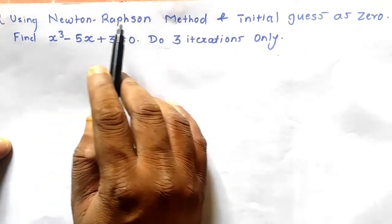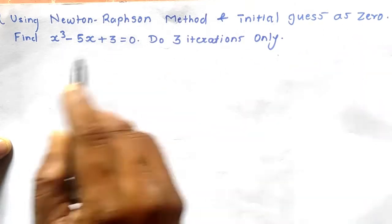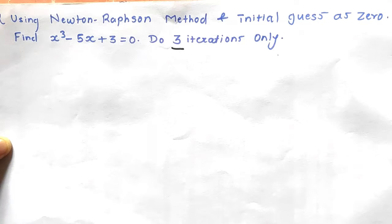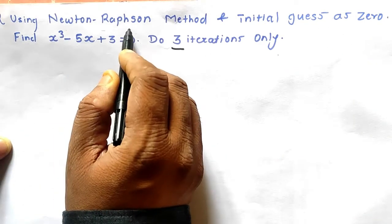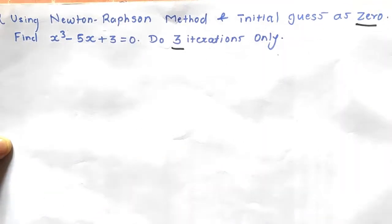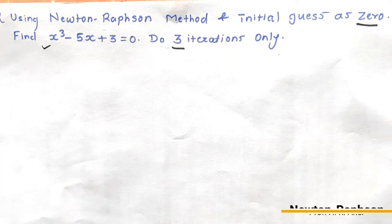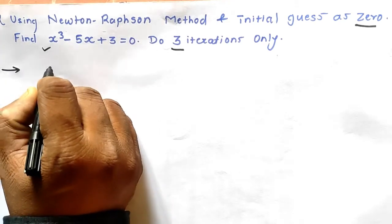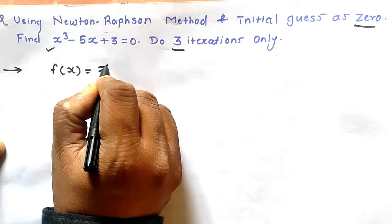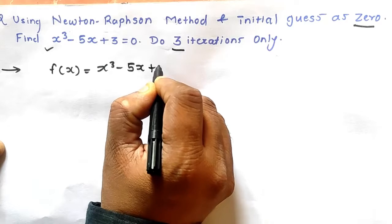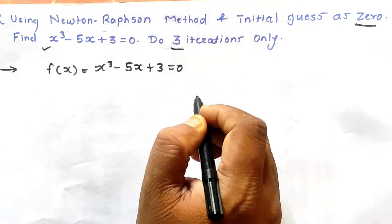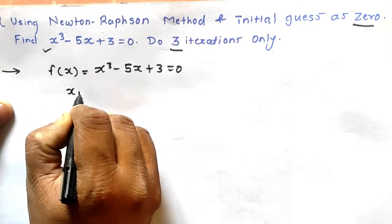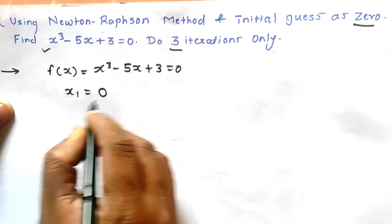The numerical given is: using the Newton-Raphson method with initial guess as 0, find the root of x³ - 5x + 3 = 0, and you have to go for three iterations. So, what is given: the method is Newton-Raphson, the initial guess x1 = 0, and the function is f(x) = x³ - 5x + 3 = 0.